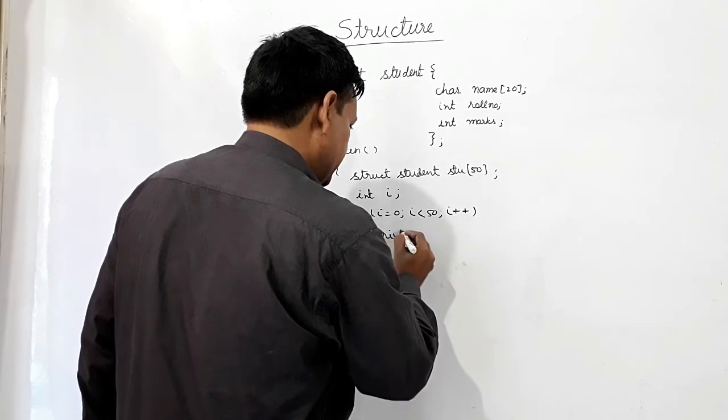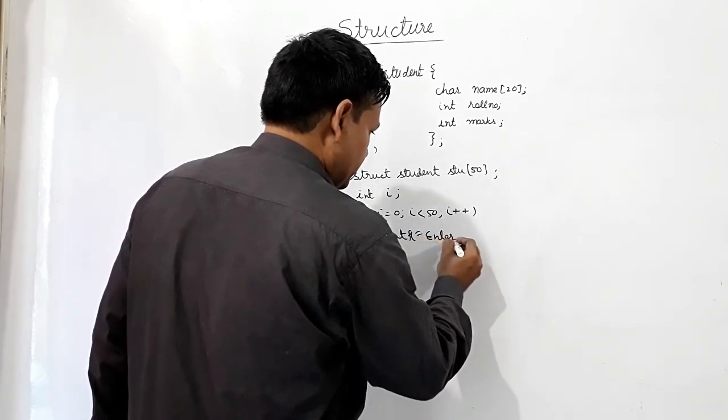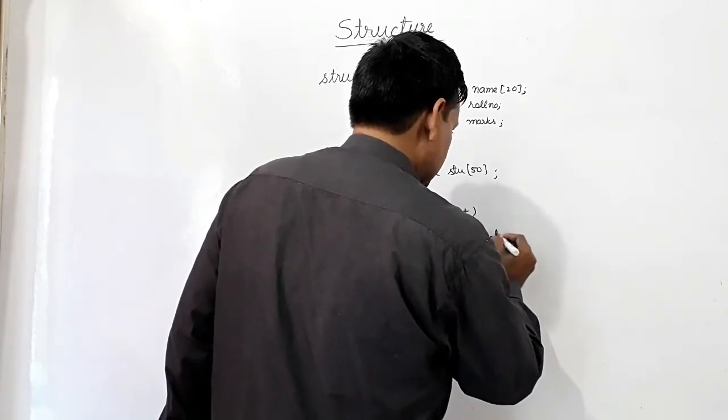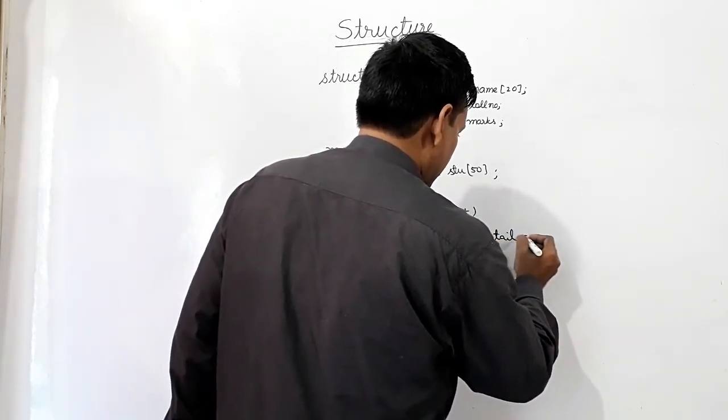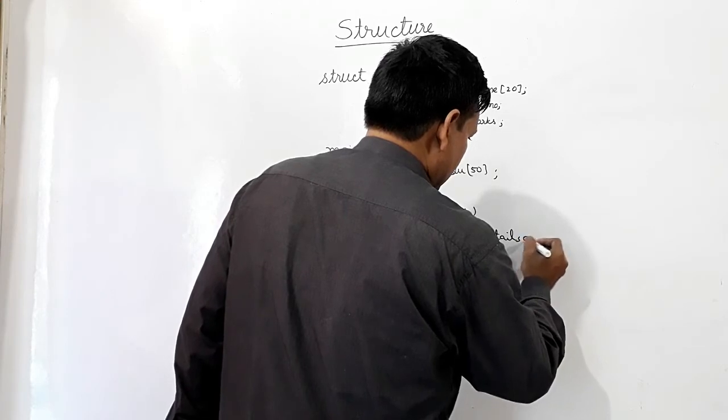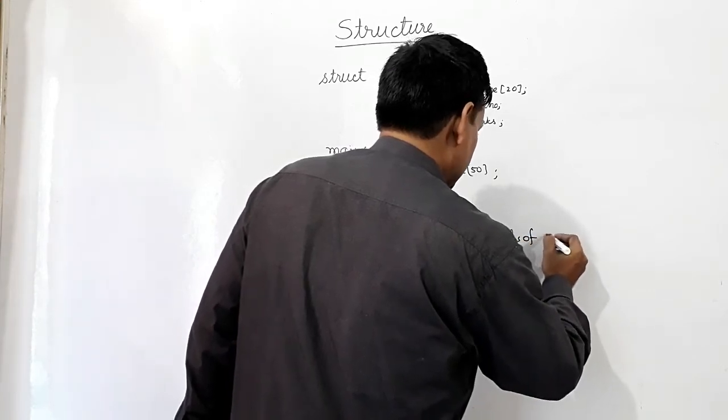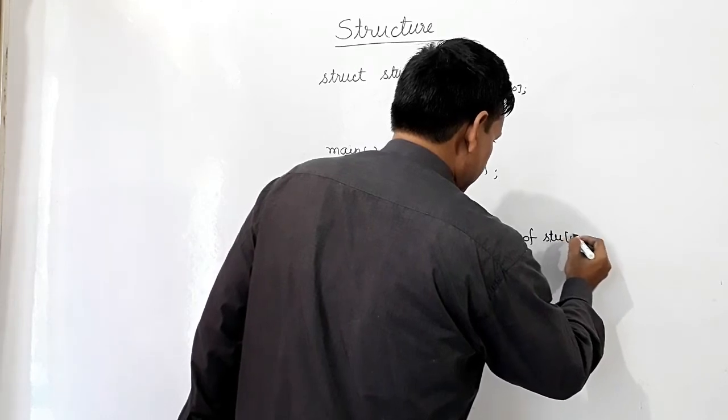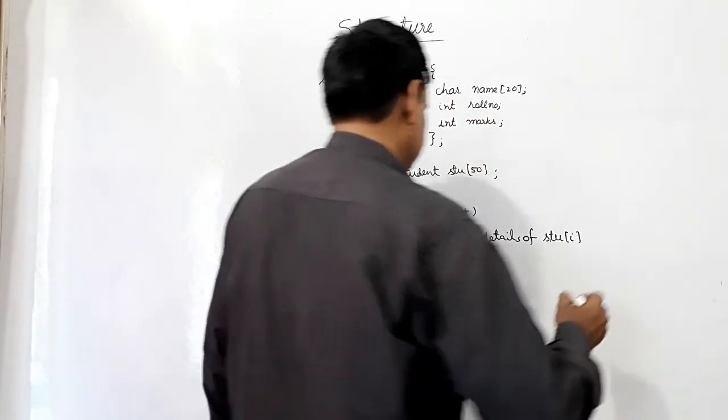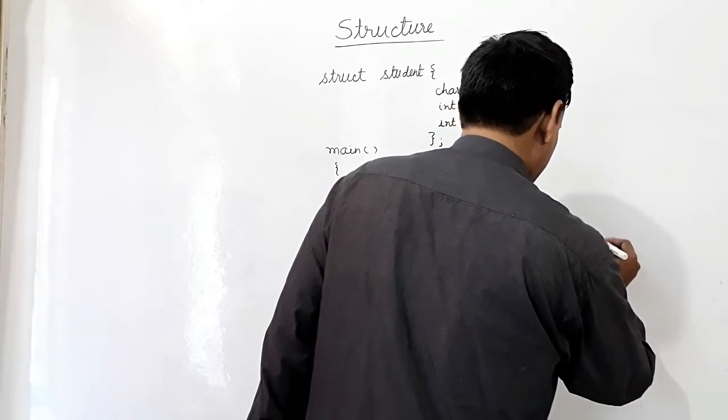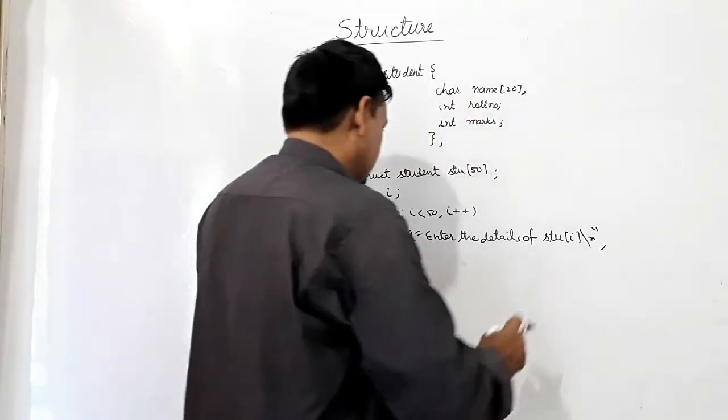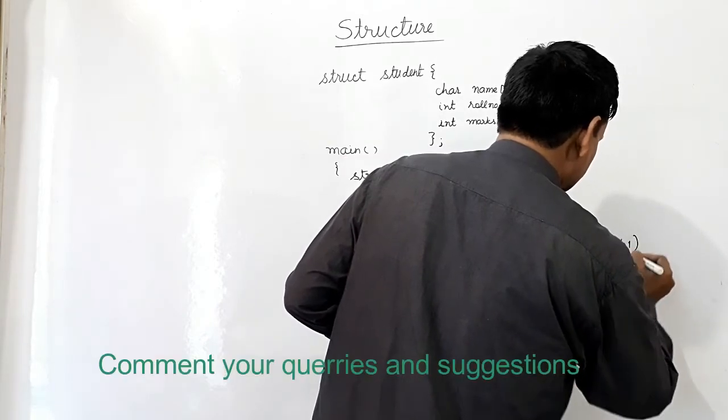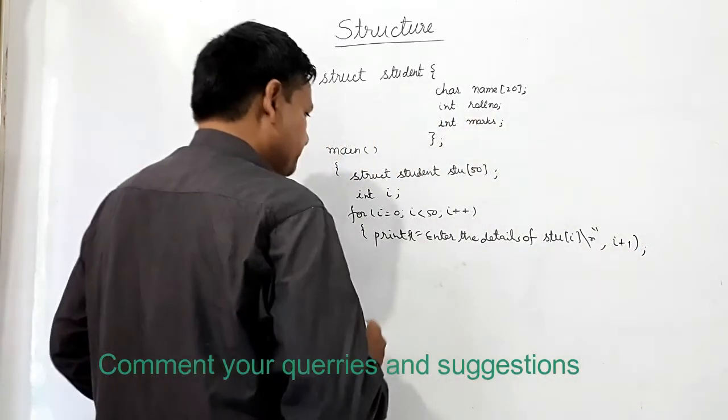Printf, enter the detail of student i. And this i, I am starting with 0, so I will use here i plus 1.